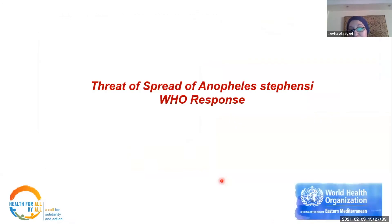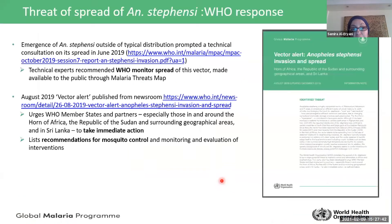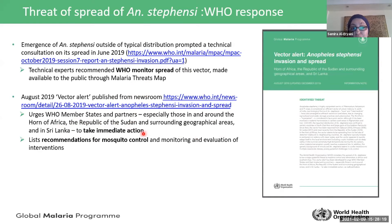In response to the threat of spread of Anopheles stephensi, its emergence outside the typical distribution prompted a technical consultation organized by GMP in June 2019. Technical experts recommended that WHO monitor the spread of this vector through the malaria threats map, and a vector alert was published — a document with recommendations urging WHO member states and partners, especially those in and around the Horn of Africa, the Republic of Sudan, and Sri Lanka, to take immediate action including mosquito control and monitoring and evaluation of interventions.